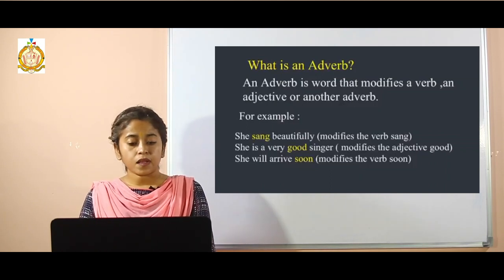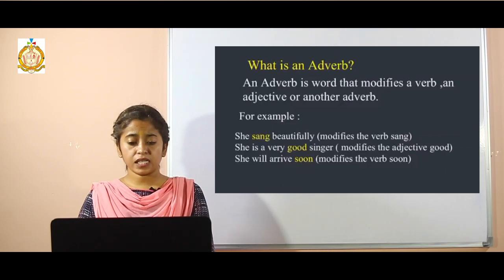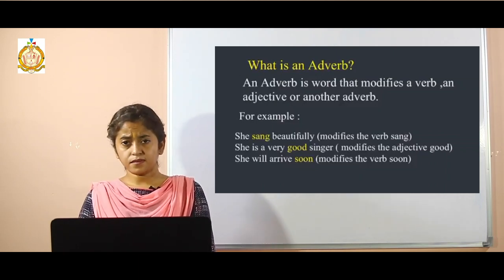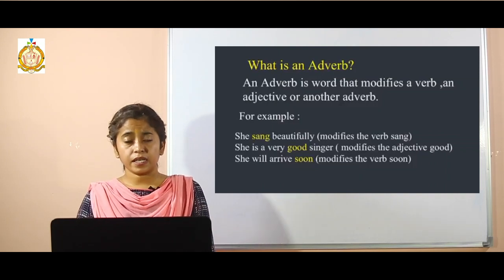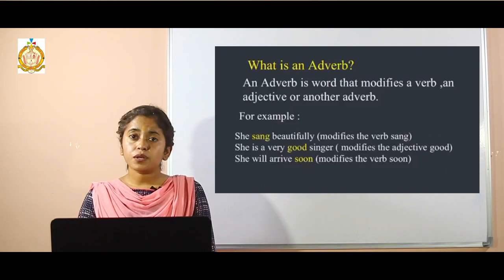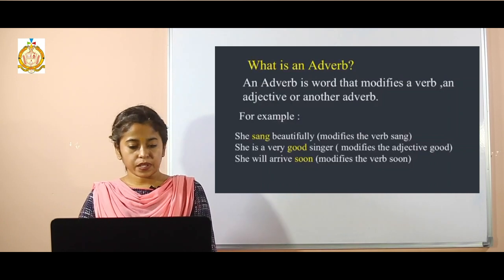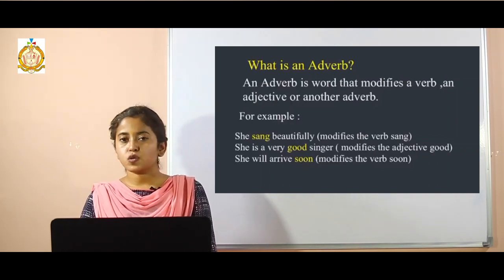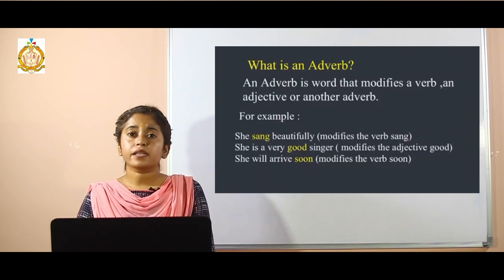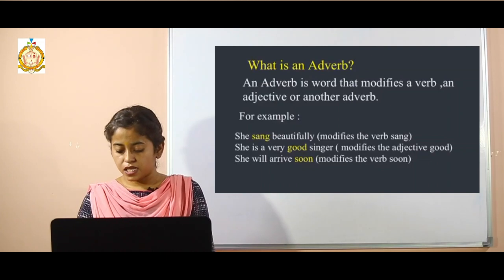See another example: 'She is a very good singer.' Here, 'very' is modifying the adjective 'good.' That 'very' is your adverb — it modifies the adjective 'good.' Then 'She will arrive soon' — 'soon' modifies the verb and is your adverb in that sentence.